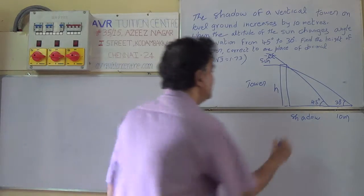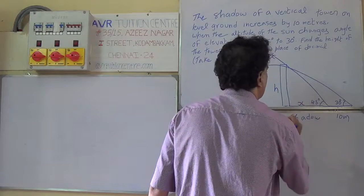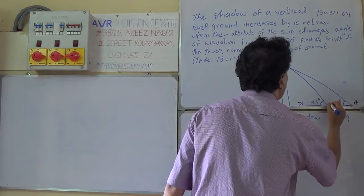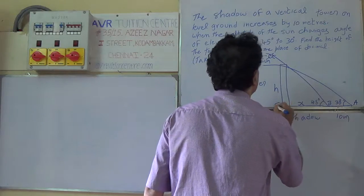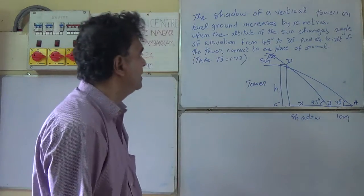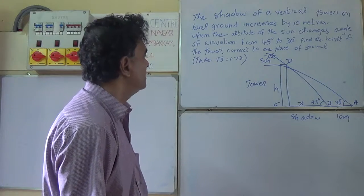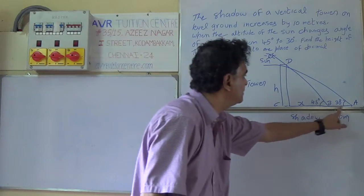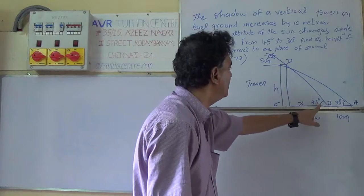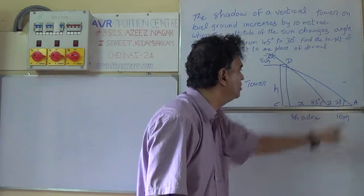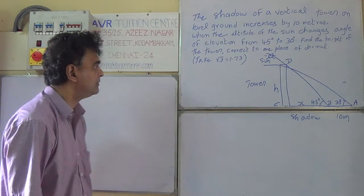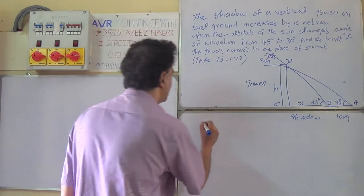Let the height of the tower be X, and let the points be labeled A, B, C, D. The shadow length increases by 10 meters when the elevation changes from 45 degrees to 30 degrees.